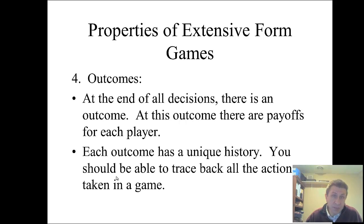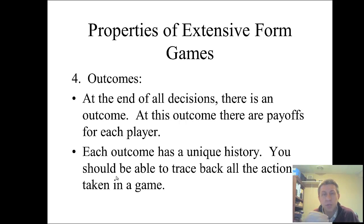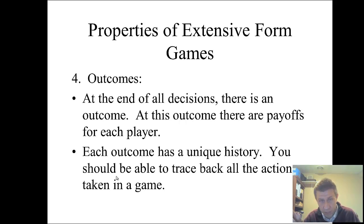With these extensive games, an important point: each outcome has to have a unique history so you can trace back the actions. When we go through these games, we'll be doing what's called the subgame perfect Nash equilibrium, or the rollback equilibrium depending on which textbook you use — they mean the same thing. We study what we expect to happen by working backwards all the way to the beginning, so from each outcome you can trace back the unique history.